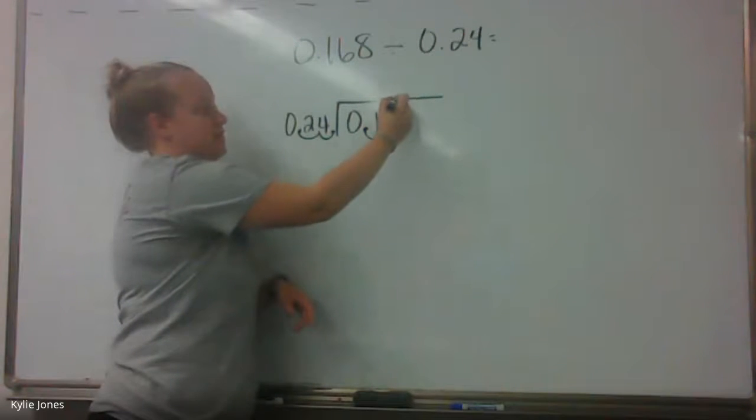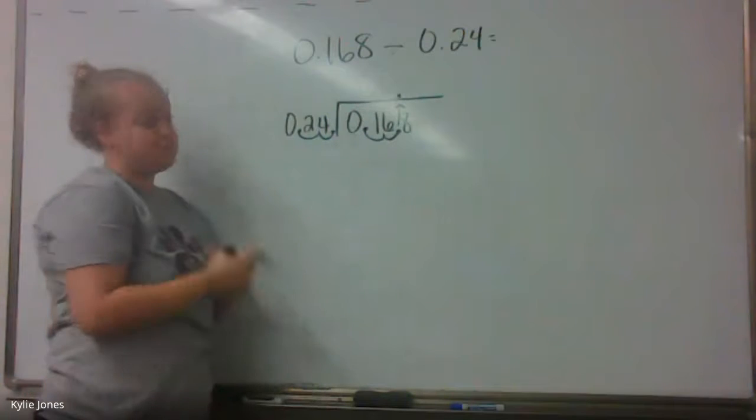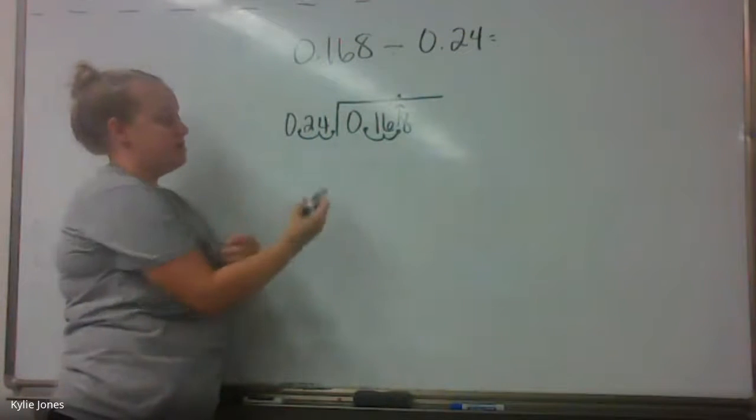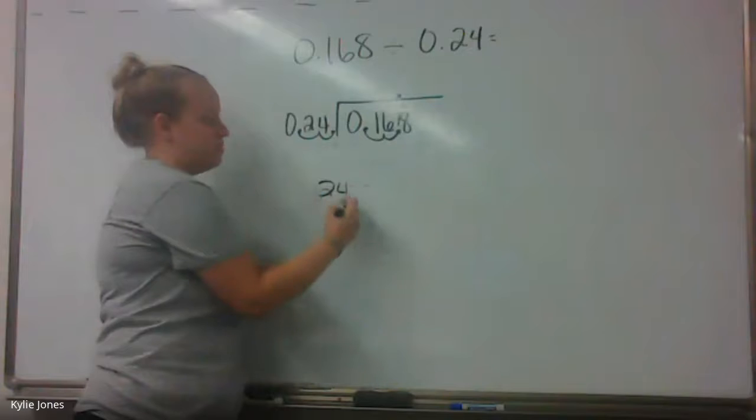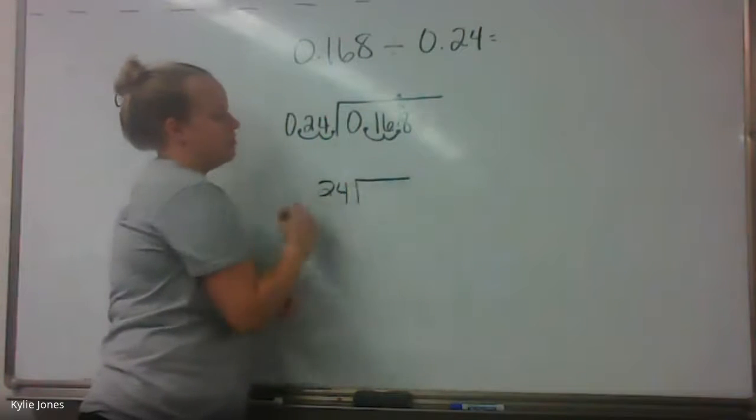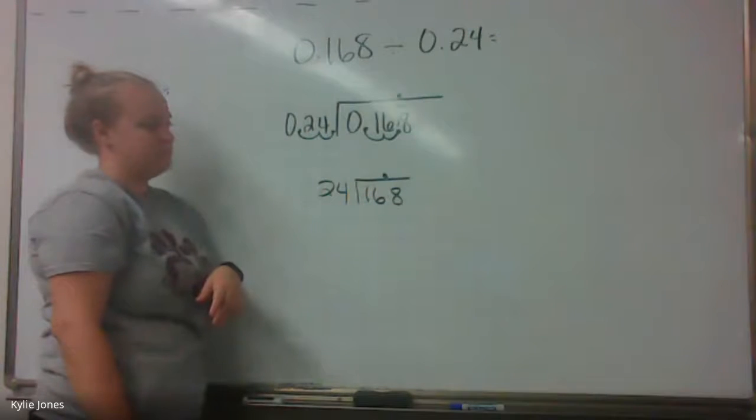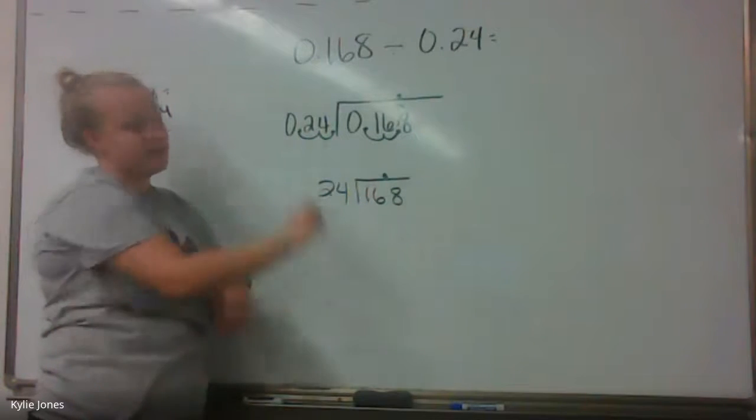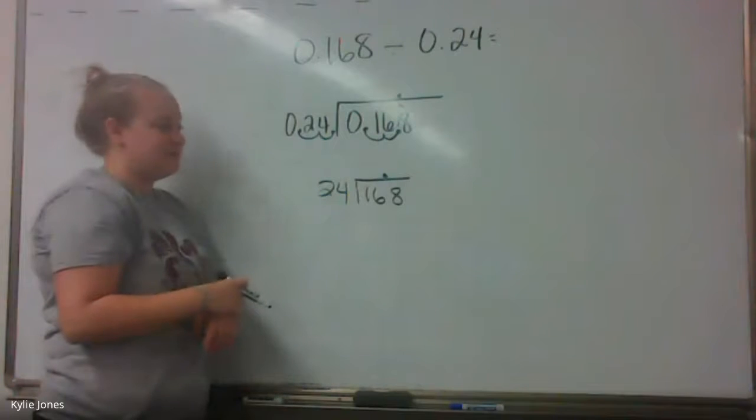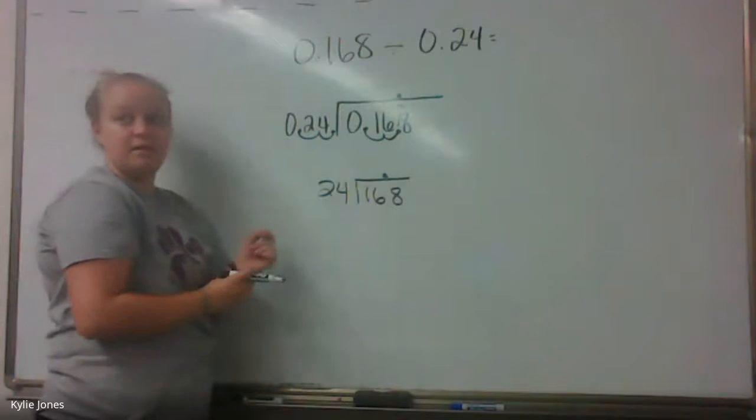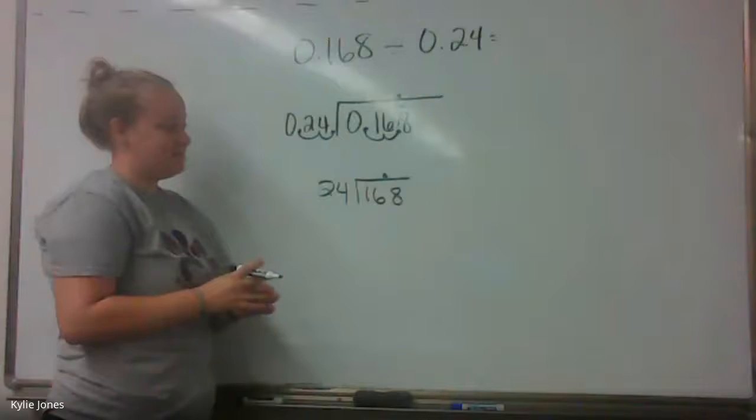And then the last part of the rhyme is to throw it on the roof. So now we essentially have the problem 24 into 168 with our decimal right here. You don't have to rewrite it if you don't want to, but sometimes it's nice to clean it up. I know the answer. Well, hang on. Give them my answer. Alright.